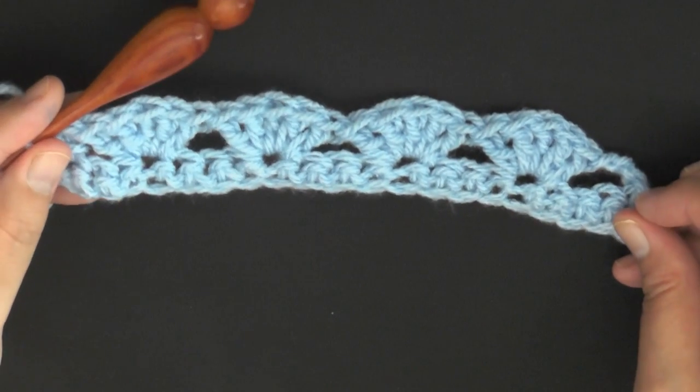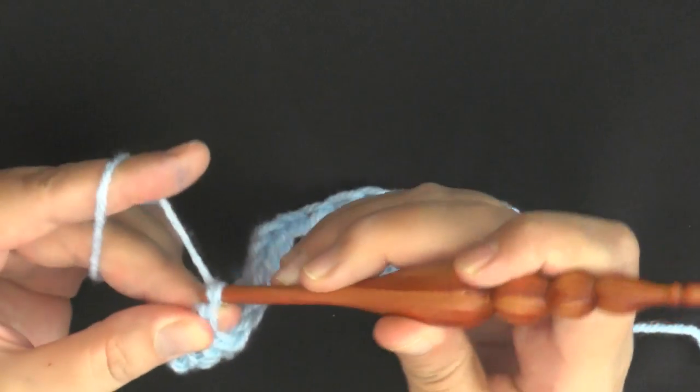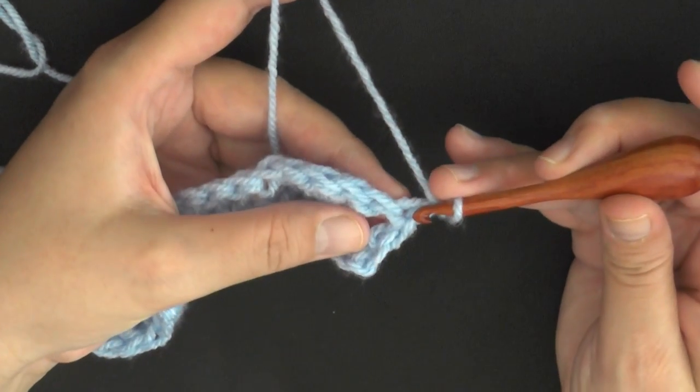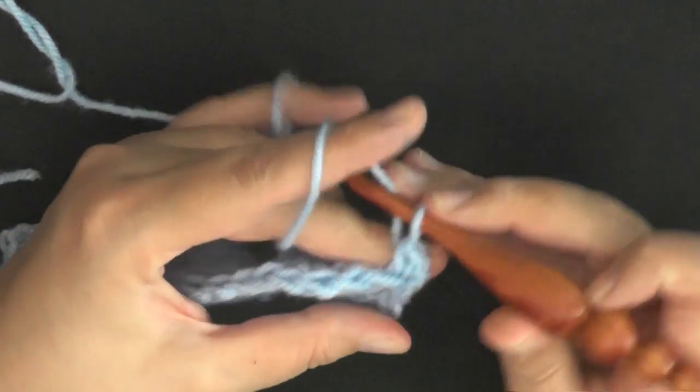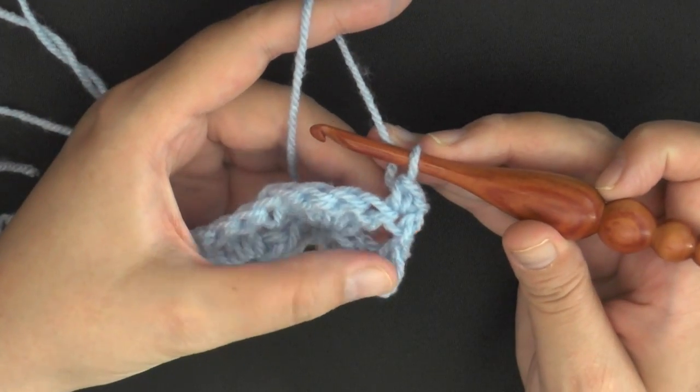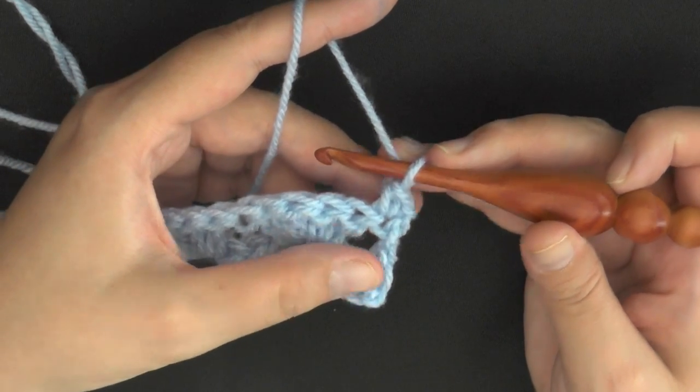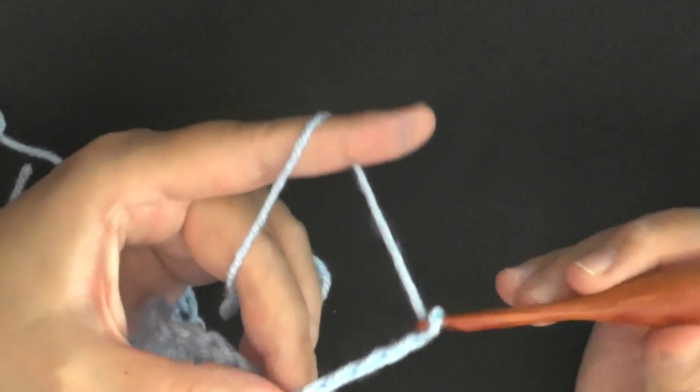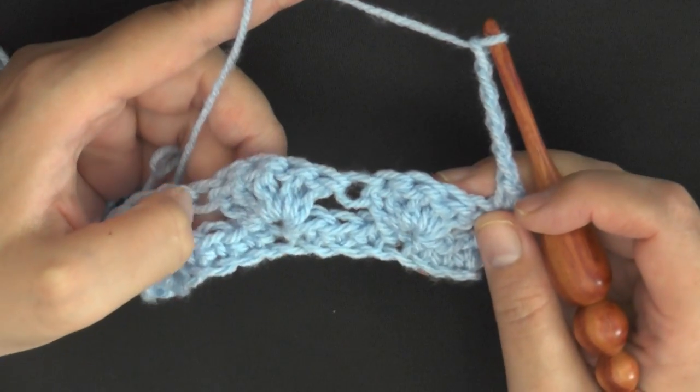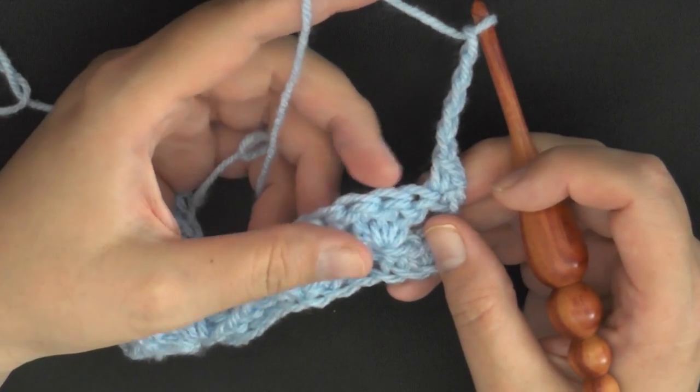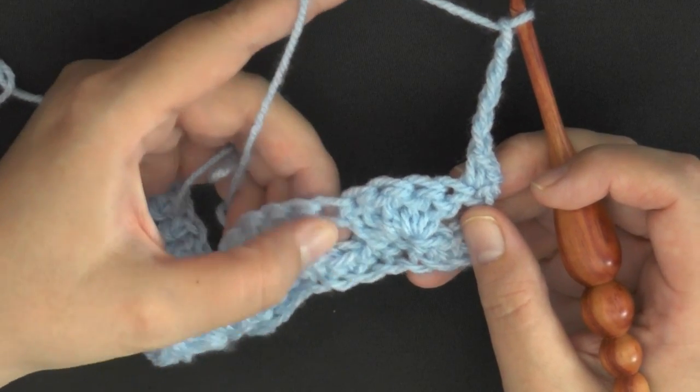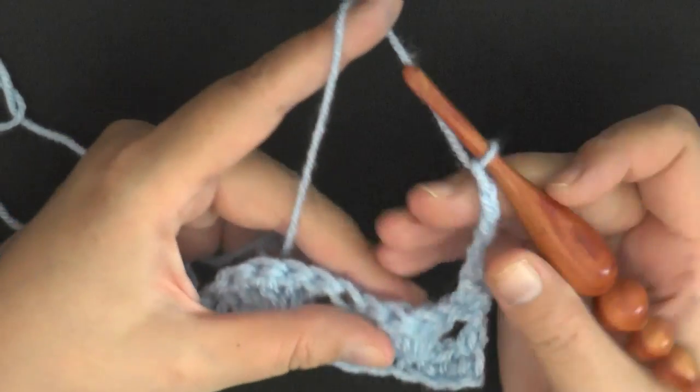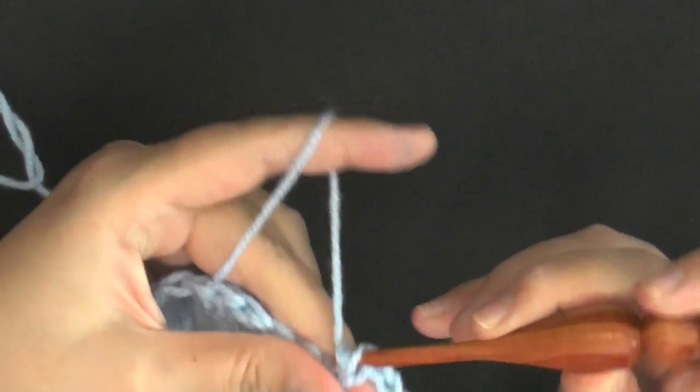So for row three, you'll chain one and turn. You want to put a single crochet in the very top of your double crochet here, first stitch of the row. Now we're going to be chaining five, one, two, three, four, and five. And now we're going to go over our shells and find that space in between the two shells, and we're going to be putting a single crochet in this big space to anchor that chain down.